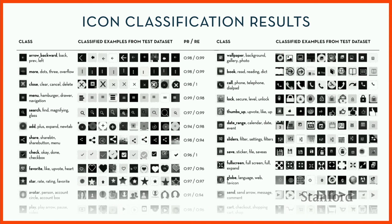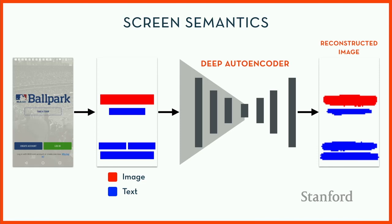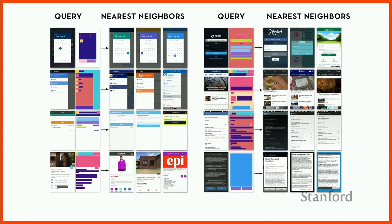Once we had element-based semantics, we wanted to see if we could bootstrap higher-level semantics. We trained a deep autoencoder to capture semantic properties over screens. If you train the autoencoder with those semantic versions of screenshots, you can learn a space where nearest-neighbor queries return semantically similar screens. If you query with a login screen, you get back other login screens from other apps — none of the nearest neighbors are screens from the same app, even though they look very similar.